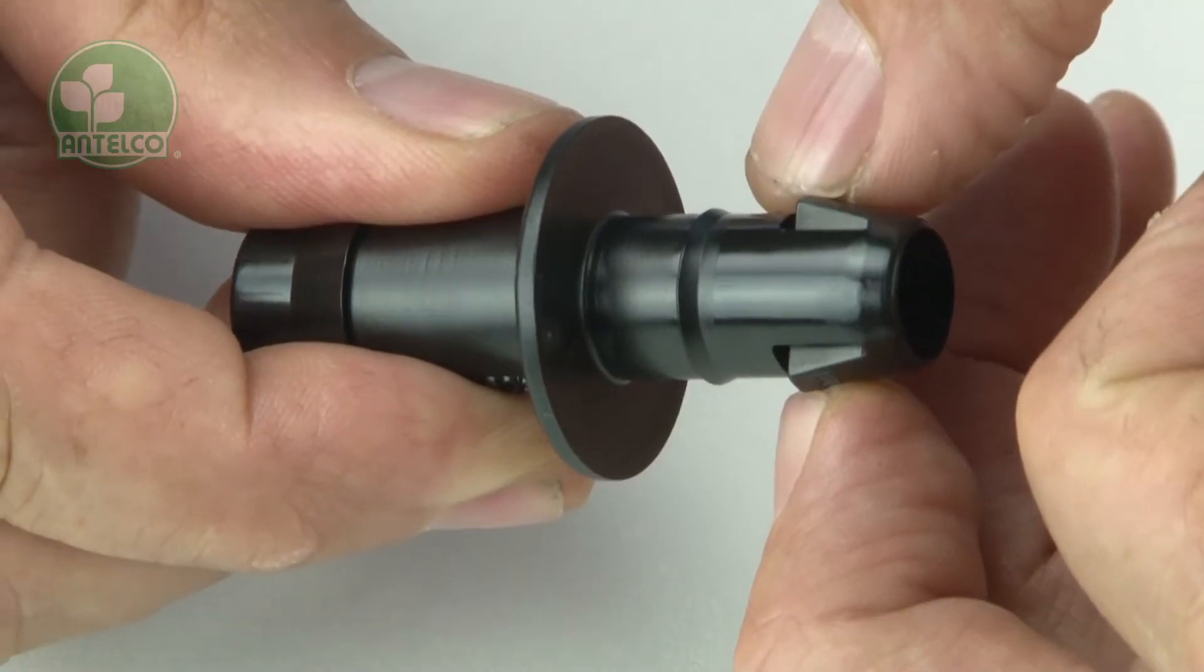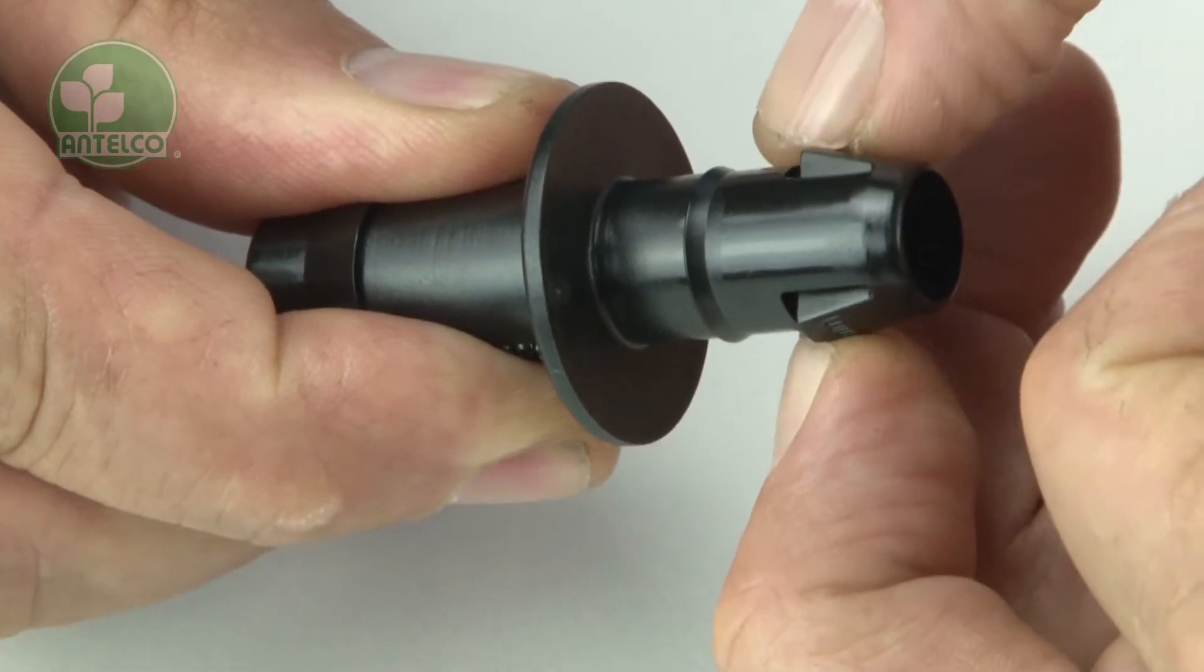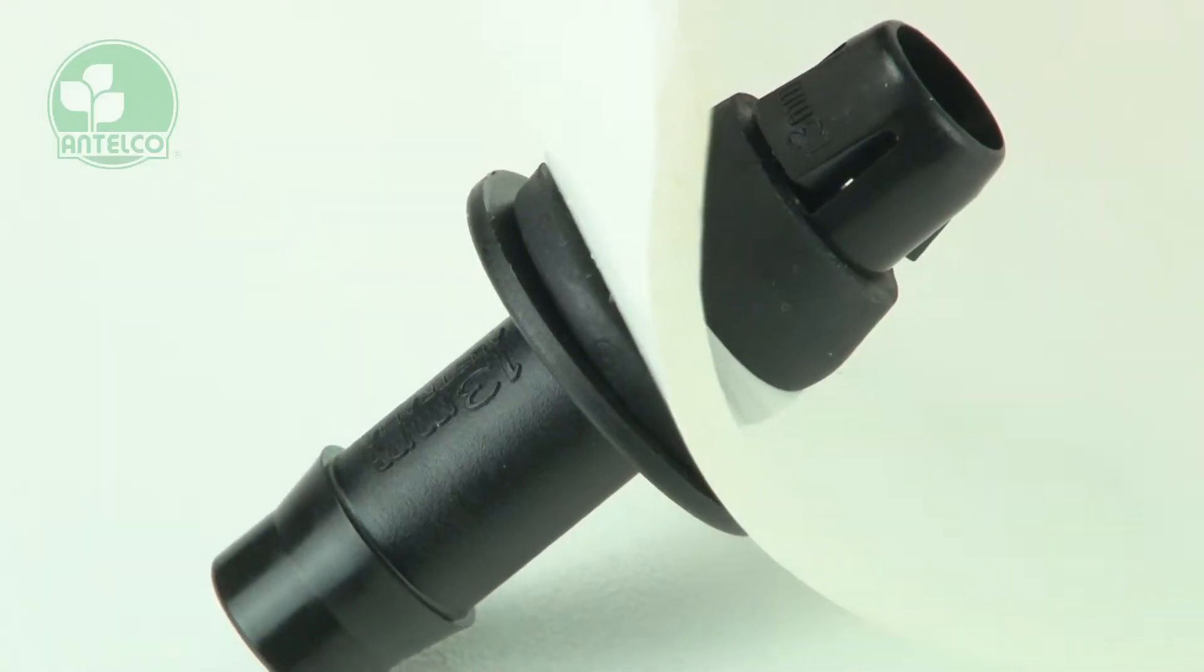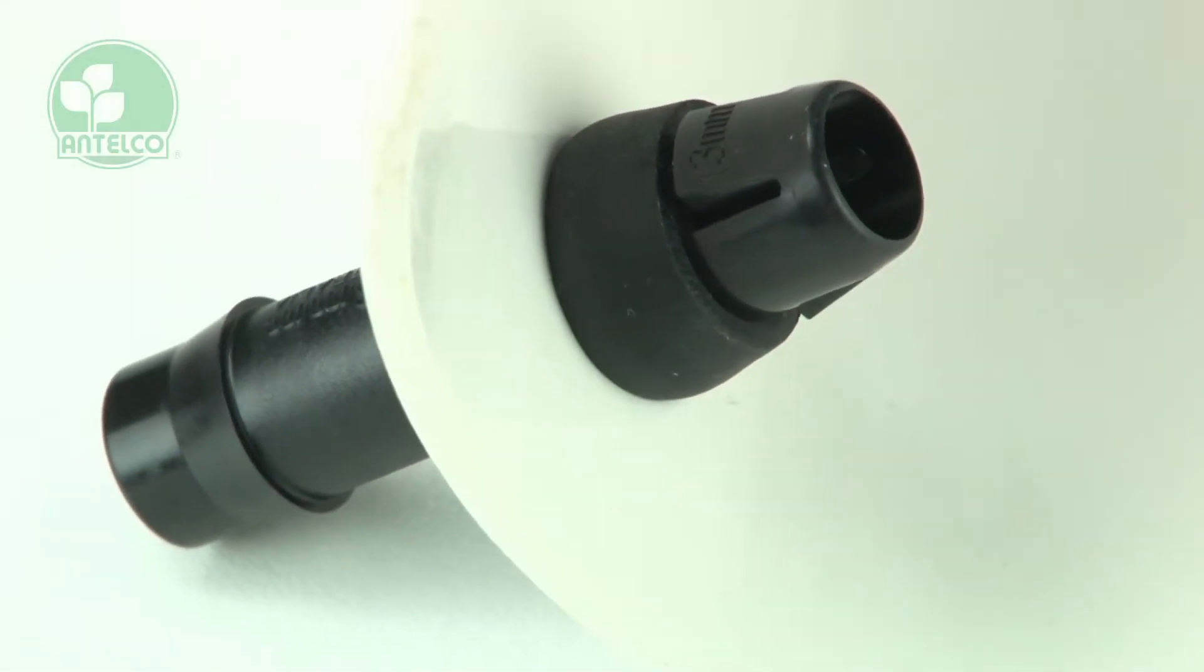The Xpando take-offs have collapsible barbs. This reduces chances of damage as they are pushed through the grommets, and it also prevents pull-out when installed.